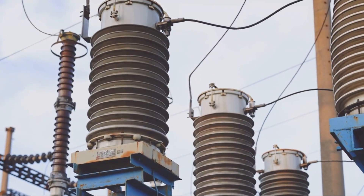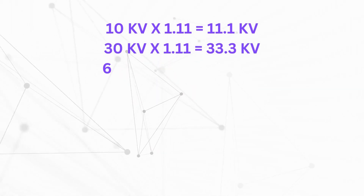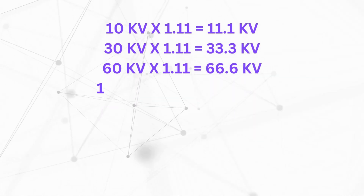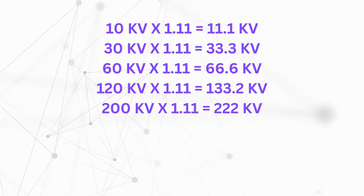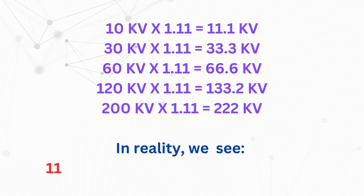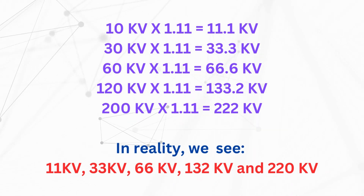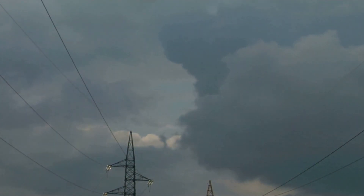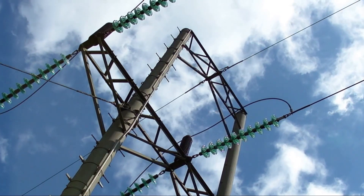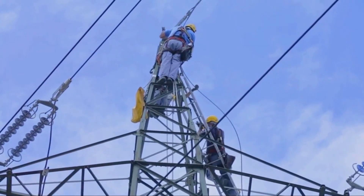Consider this: if we were to strictly follow the form factor, we'd expect to see voltages like 11.1 kV, 33.3 kV, 66.6 kV, 133.2 kV, and 222 kV. But in reality, we see voltages like 11 kV, 33 kV, 66 kV, 132 kV, and 220 kV. These figures don't exactly align with their theoretical form factor counterparts. This discrepancy tells us that the form factor isn't the driving force behind the selection of transmission line voltages — it's a piece of the puzzle, but not the whole picture. So if it's not the form factor, then what?